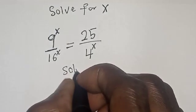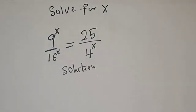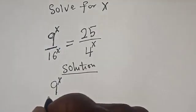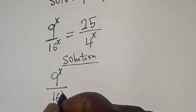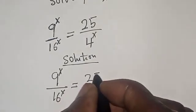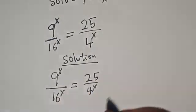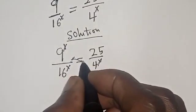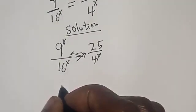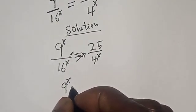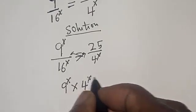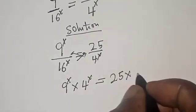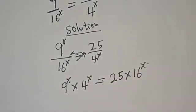Solution. We have the given equation: 9 raised to power s divided by 16 raised to power s is equal to 25 divided by 4 raised to power x. Let's cross multiply. Then if you cross multiply, we have 9 raised to power s multiplied by 4 raised to power x is equal to 25 multiplied by 16 raised to power x.